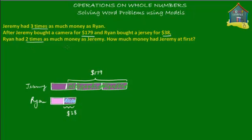We know that Ryan is richer than Jeremy after the purchases. Ryan had two times as much money as Jeremy. If I split Ryan's remaining money into two, because Ryan is left with twice as much money as Jeremy, then Jeremy must be left with only one pink block of money — because Ryan has two times as much. So Ryan has two pink blocks and Jeremy has one pink block remaining.